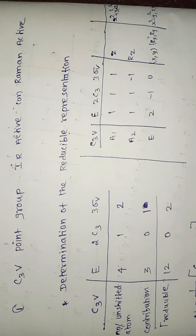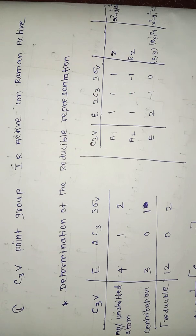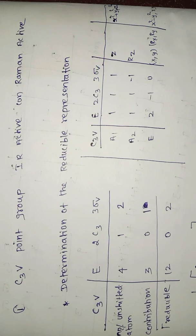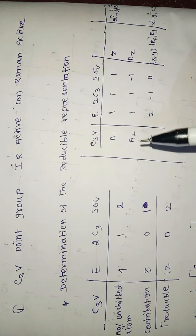In this class, we have a compound in the C3V point group and a character table. We will determine which modes are IR-active and Raman-active. We have two tables here: the reducible representation table and the IR-active and Raman-active table.